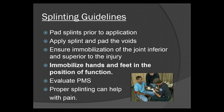Pad splints prior to application. Apply the splint and then pad the voids. Ensure immobilization of the joint inferior and superior to the injury — which means if you have an injury in the mid forearm, you're going to splint the elbow and the wrist. This simply reduces the movement around the injury.